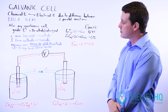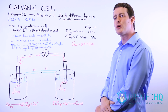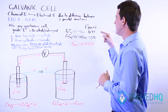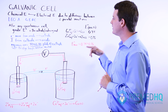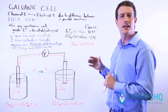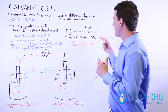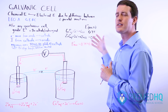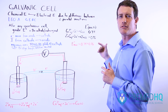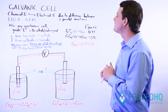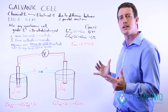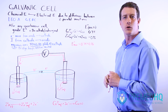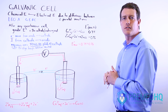To find the standard maximum energy, E° max, we add the reduction potential at the cathode to the oxidation potential at the anode. The oxidation potential is the reverse sign of the reduction potential. So zinc's reduction potential is −0.76 V, meaning its oxidation potential is +0.76 V. Combined with copper's reduction potential, this yields a positive E° max, meaning the reaction is spontaneous.